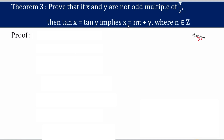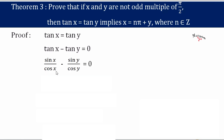So let's take tan x = tan y. We can also write it as tan x − tan y = 0, by shifting tan y to the other side of the equation.